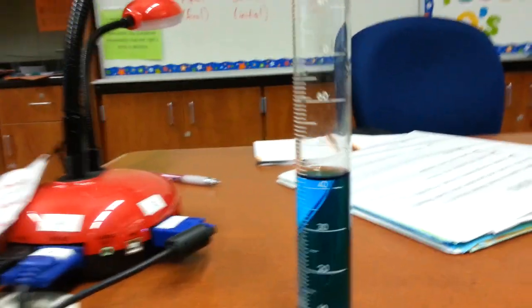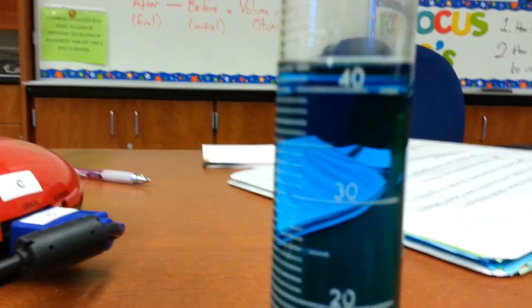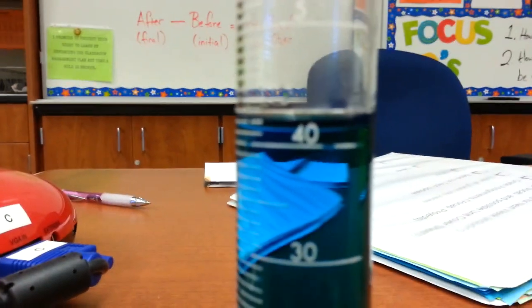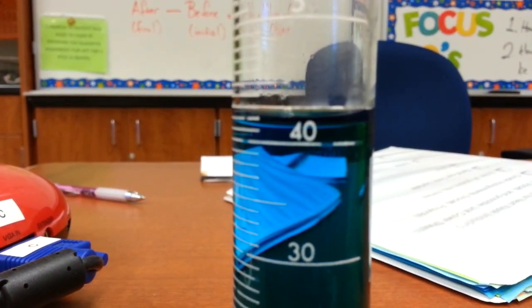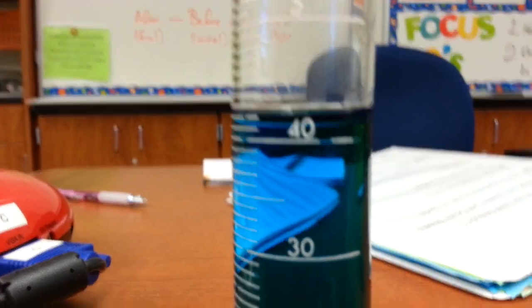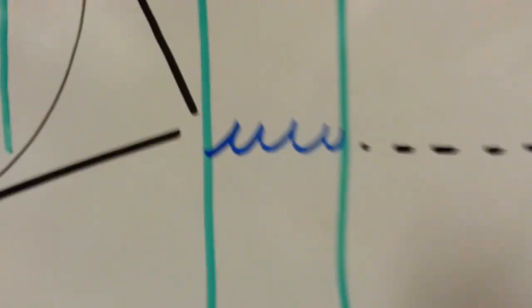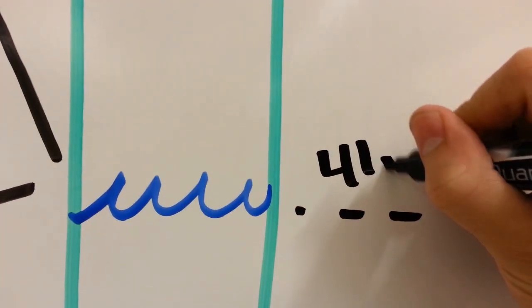So in a graduated cylinder, the volume is measured in milliliters. I can see here, if I look at the meniscus, it's about 41 milliliters. So I'm going to go ahead and write 41 milliliters right here.